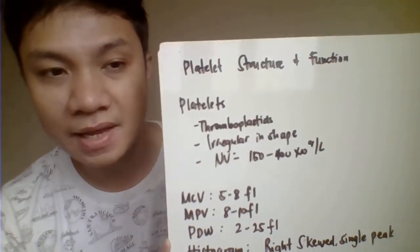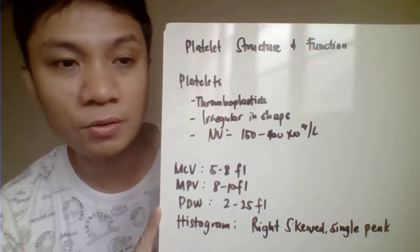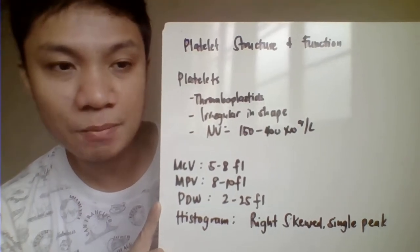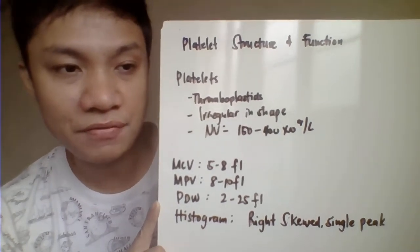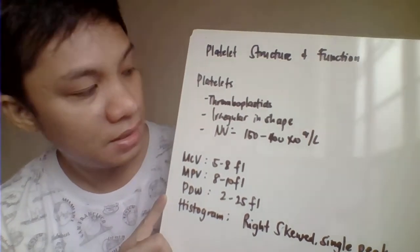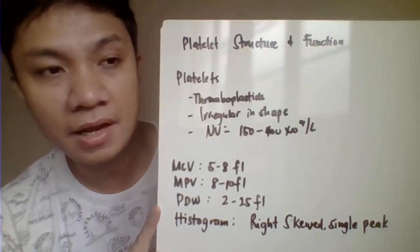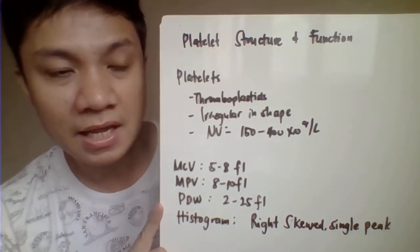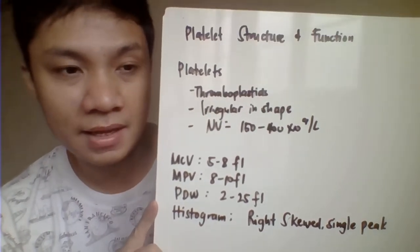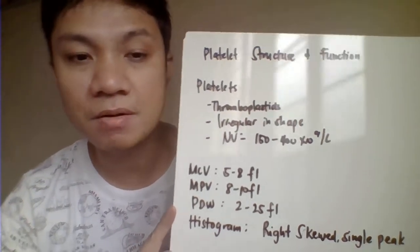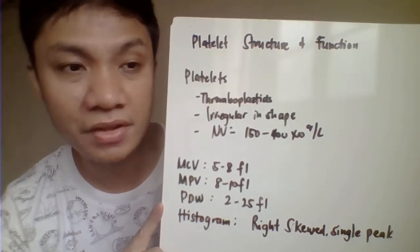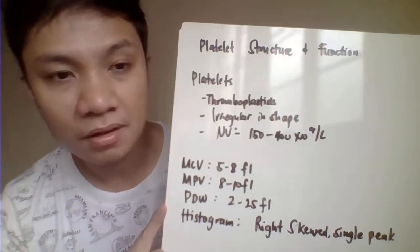Platelets are anucleated, meaning they do not have a nucleus. They are cytoplasmic fragments of megakaryocytes. They have an irregular incise and can assume a circular or other shape. In the peripheral blood smear, platelets appear granular and have different shapes.